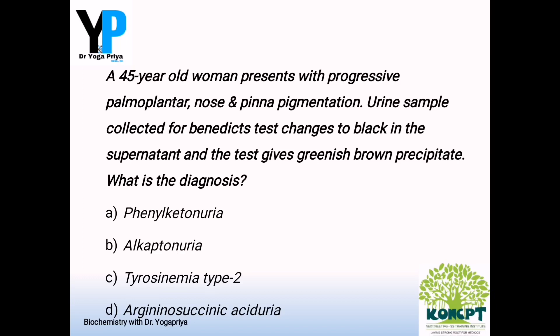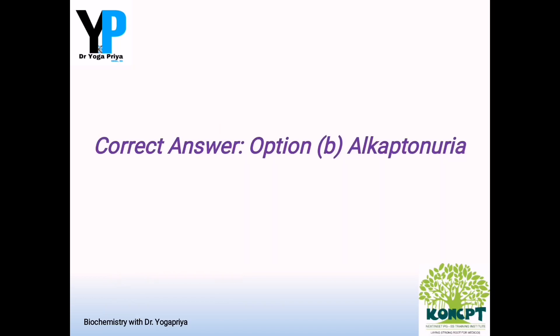So what is your most probable diagnosis? The options include: Option A - phenylketonuria, Option B - alkaptonuria, Option C - tyrosinemia type 2, and Option D - argininosuccinic aciduria. The key points to arrive at the diagnosis include pigmentation, the end result of Benedict's test, and the change in the colour of urine in the supernatant layer. The correct answer is Option B, alkaptonuria.